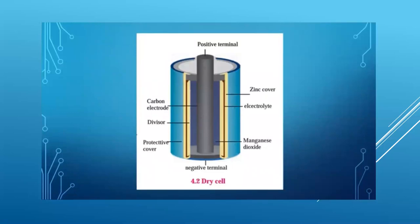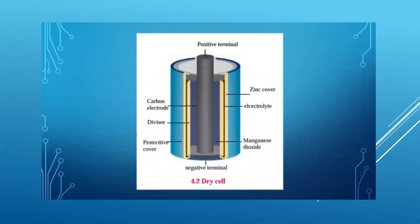Now carefully break open this zinc layer — there is another layer inside. An electrolyte is filled between these two layers. The electrolyte contains negatively charged and positively charged ions — these are the carriers of electricity. The electrolyte is a wet pulp of zinc chloride and ammonium chloride. There is a graphite rod at the center of the cell — the grayish rod at the center — which is the positive terminal of the cell. A paste of manganese dioxide is filled outside the rod.